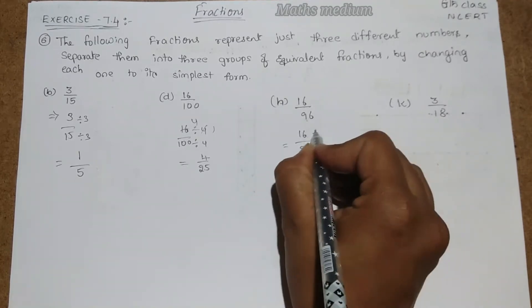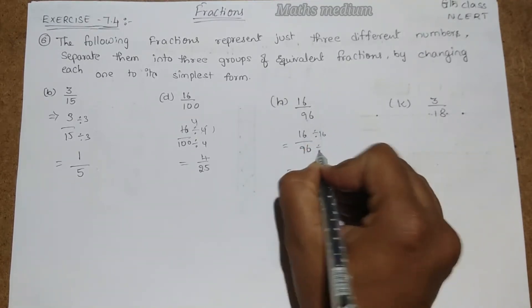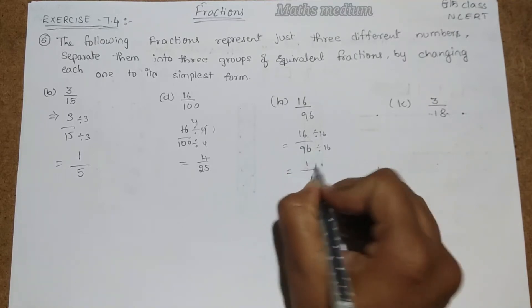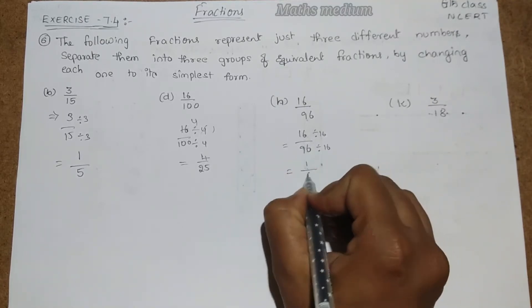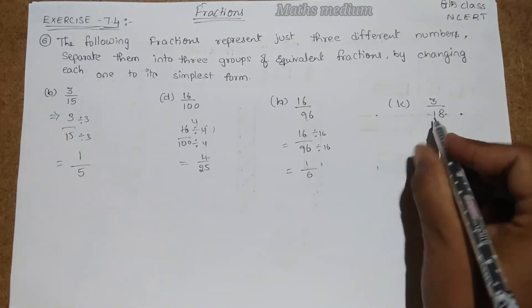Three threes are 3 and three sixes are 18, so 1 by 6. If you solve the remaining questions like here, I skipped a, b, c, e, f, g, h, i, j, k, l.